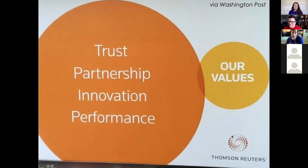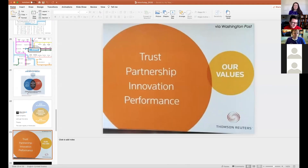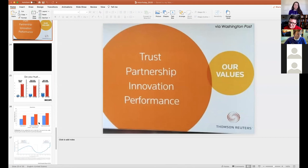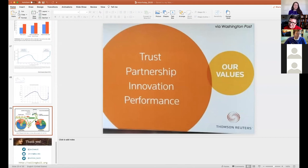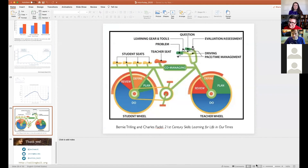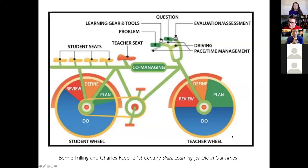My favorite Venn diagram comes from Thomson Reuters — a large company you get a lot of AP content from. It shows trust, partnership, innovation, performance, and how they cross over with their values. It doesn't give me confidence in Thomson Reuters. Since we're in education, I'll end on this: a graphic called 'Learning for Life in Our Times,' supposedly showing what we should be doing as educators. It's almost a parody of itself — I've still come up with different stories of what it means — but it's a good way to get the discussion going.